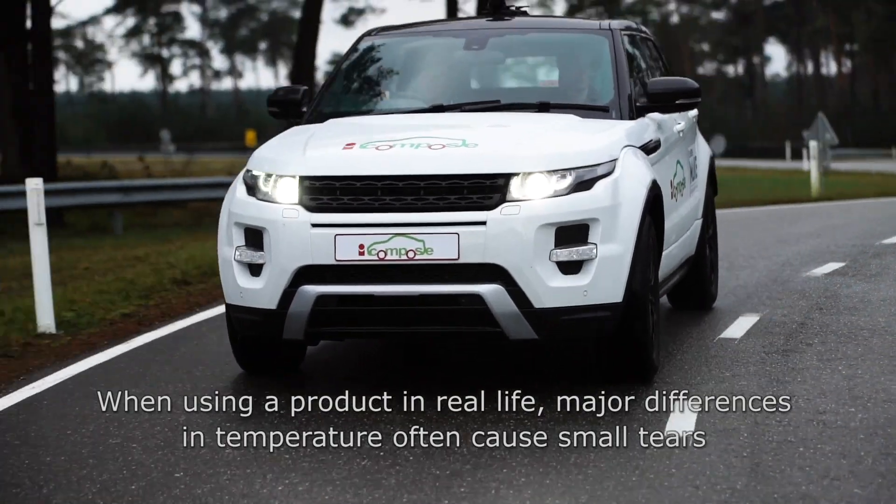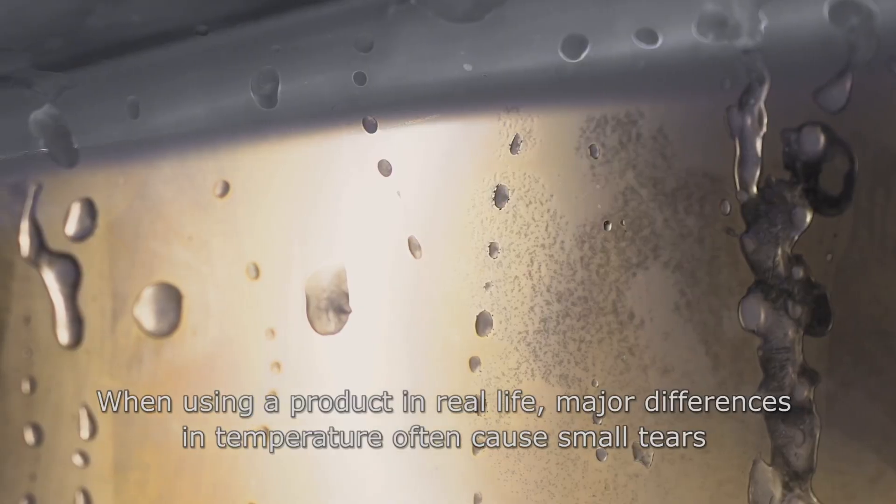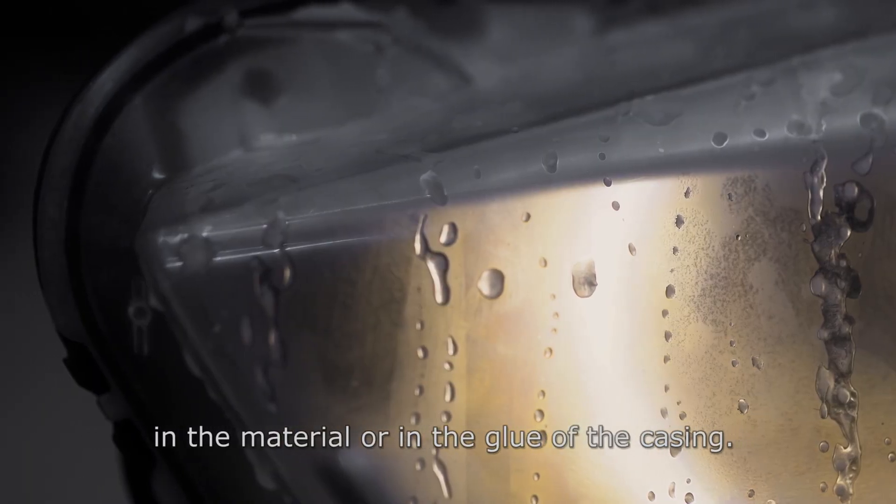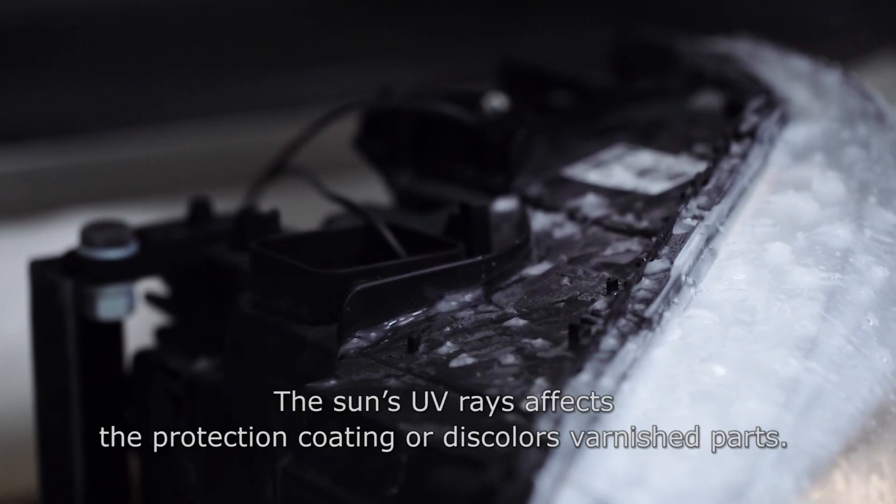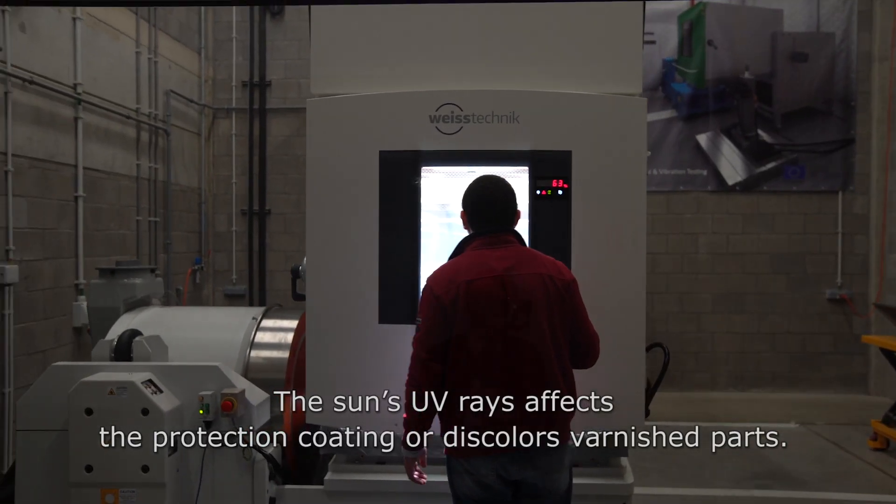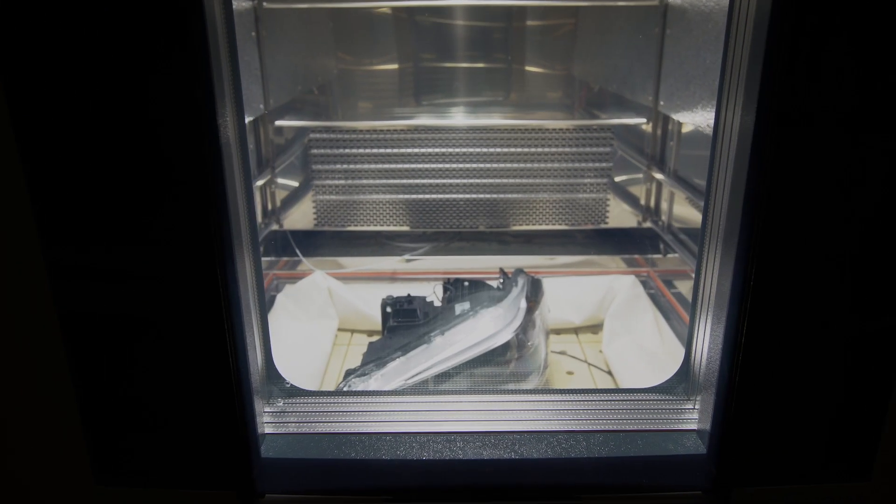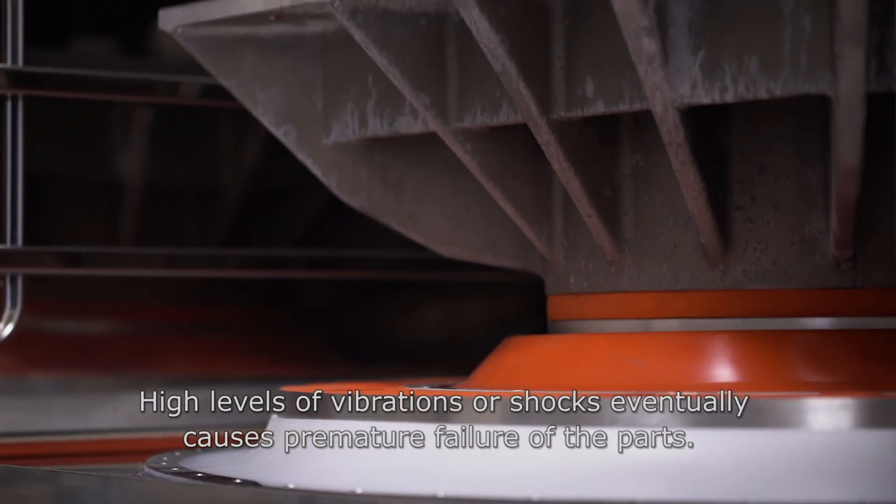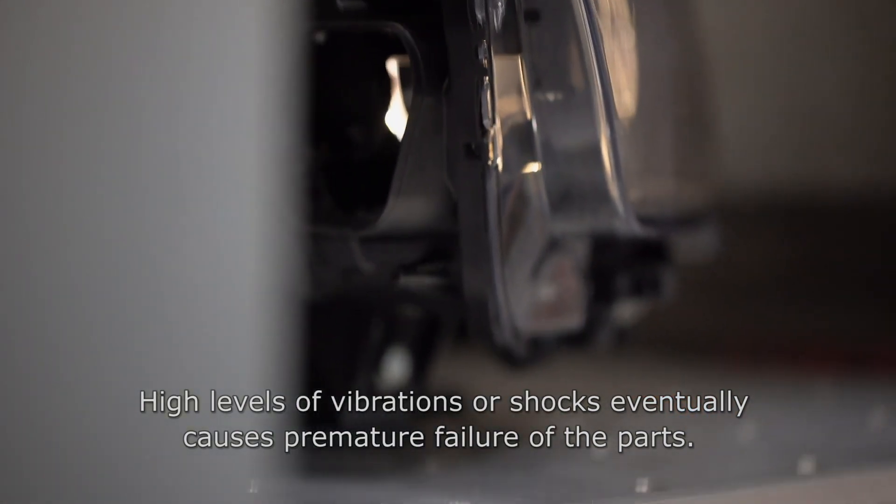When using a product in real life, major differences in temperature often cause small tears in the material or in the glue of the casing. The sun's UV rays affect the protection coating or discolor varnished parts. High levels of vibrations or shocks eventually cause premature failure of the parts.